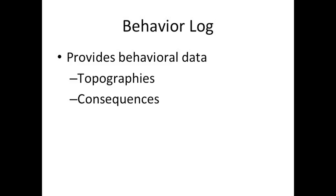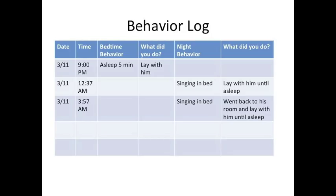Here's what the sleep cycle diary will look like. On Sunday: put to bed at 10 o'clock, fell asleep at 10:30, woke up at 2:30, walked around the house, mom put back to bed, woke them up at 9 o'clock. Was there a nap? Yes or no? I'm really interested to see when did they go to sleep, how long, and are they waking during the night — because this gets into stimulus control issues between bedtime and middle of the night. For the behavior log: at 9 o'clock, asleep within 5 minutes because I lay down with him. But at 12:37 he woke up singing in bed, so I went back and lay with him. This happening night after night gives me insight into what the problem is and how I want to solve it.